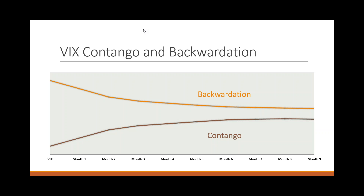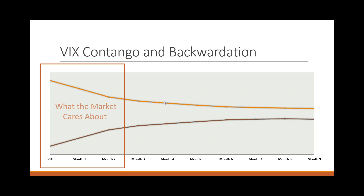We're in backwardation right now, and this is what backwardation and contango actually look like when you take spot VIX on the far left here and look at the up to nine-month VIX futures contracts that are trading. We've recently introduced VIX weekly futures — we're not going to talk about those. We're only going to talk about the standard monthly VIX contracts, because we have a lot more history to work with when we define backwardation and contango.